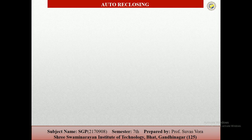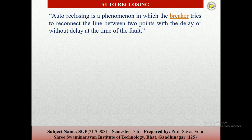Auto-reclosing: the main objective of an electrical power system is to maintain the continuity of power supply to consumers. In the event of a fault, the power supply is interrupted. About 80 to 90 percent of faults on overhead lines are transient in nature. Auto-reclosing is the phenomenon in which the breaker tries to reconnect the line between two points, with or without delay, at the time of a fault. If the supply is interrupted by the circuit breaker for a short period and the arc path is allowed to de-ionize, the line is re-energized by reclosing of the circuit breaker.